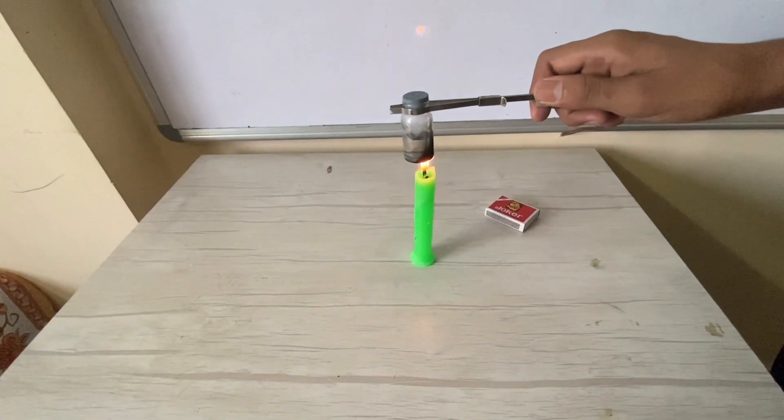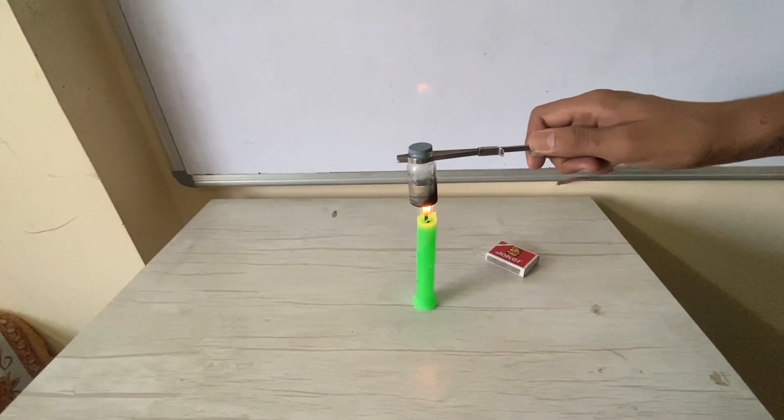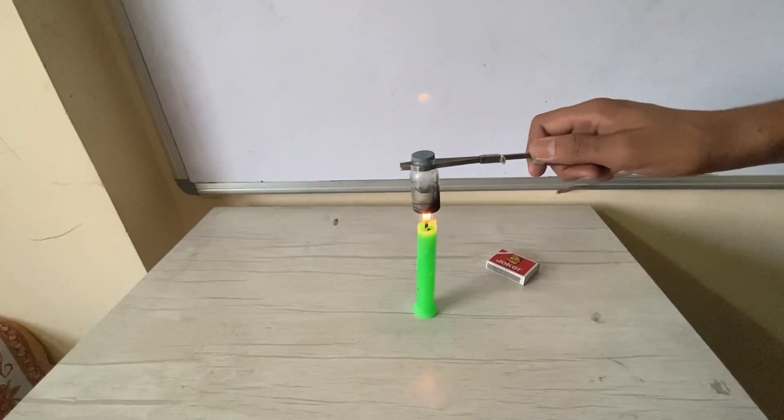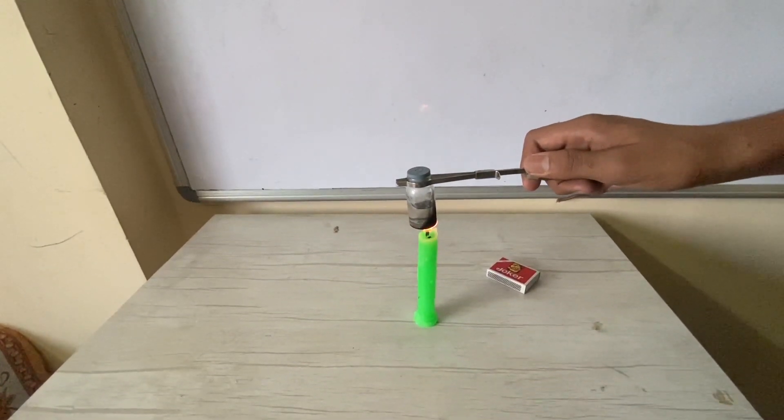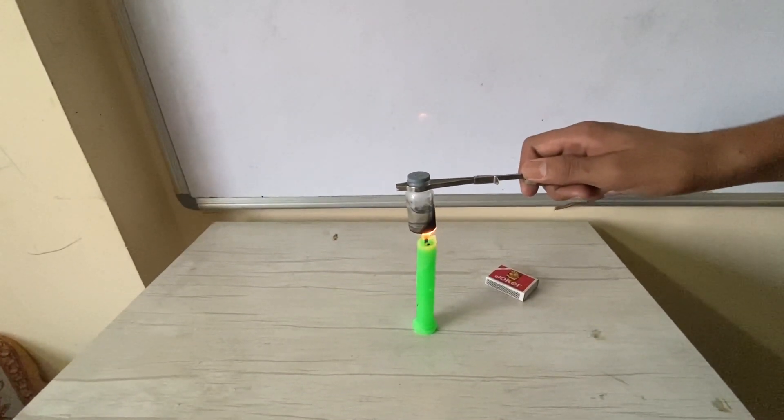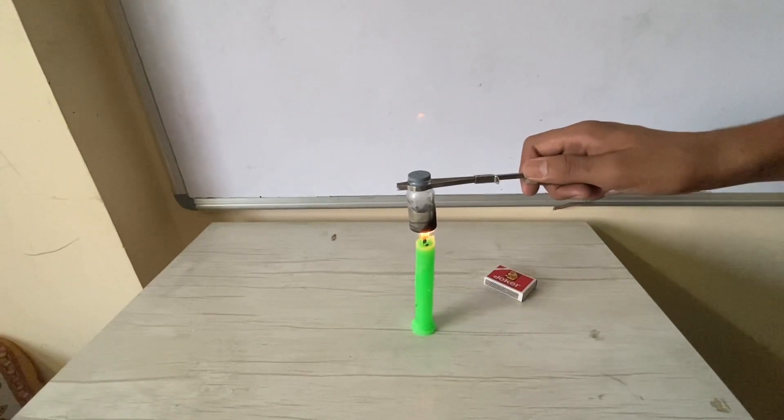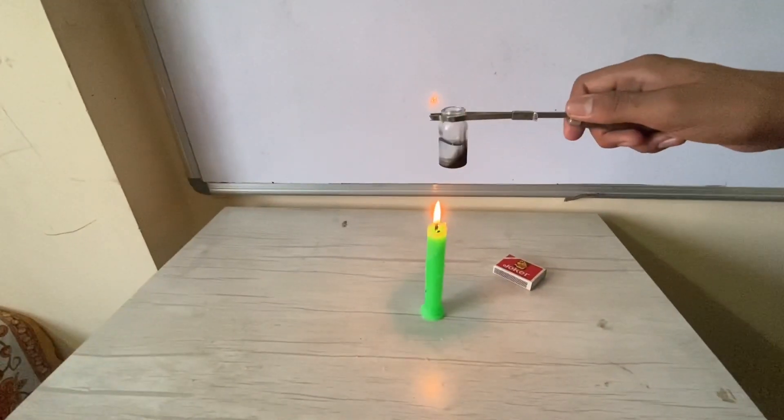After some time, you can see that the heat energy produced will push the rubber cap up. Thus, the rubber stopper pops out just like a bullet from a gun. Heat energy is converted into mechanical energy.